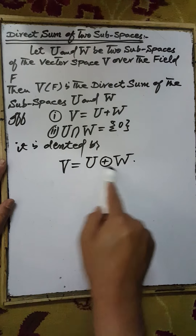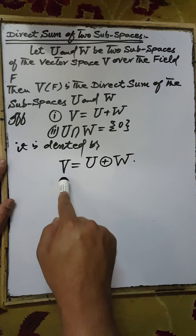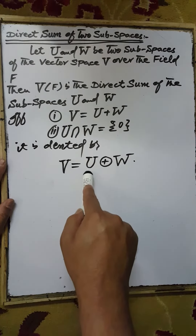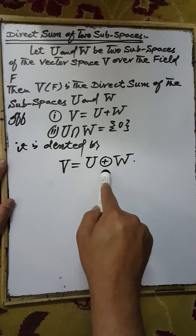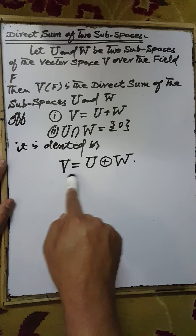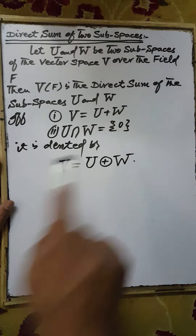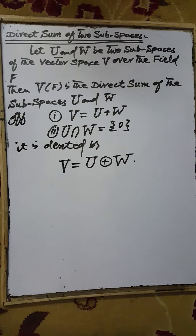It is denoted as V = U ⊕ W, that is, V is the direct sum of the subspaces U and W.